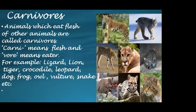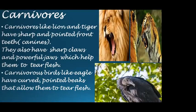What are the special features that carnivorous animals have? Carnivores like lion and tiger have sharp and pointed front teeth called canines. They also have sharp claws and powerful jaws which help them to tear the flesh. Carnivorous birds like eagles have curved, pointed beaks that allow them to tear flesh.